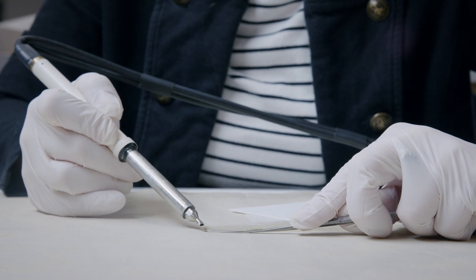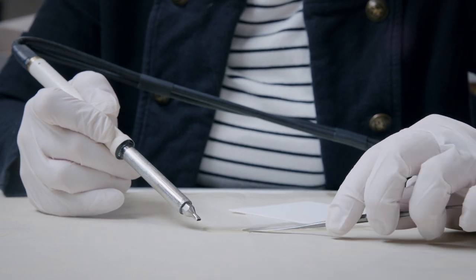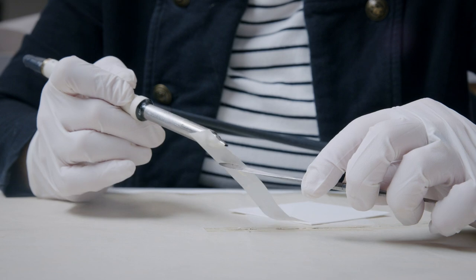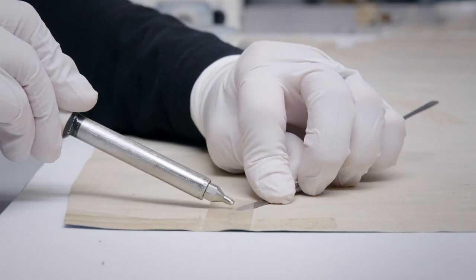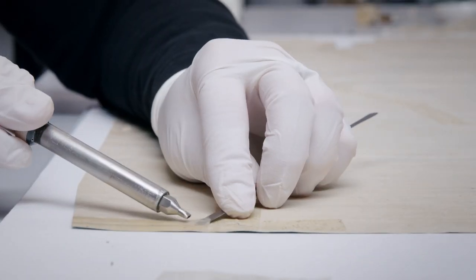This tool is a hot air pencil. It blows a gentle controlled stream of warm air at the tape. The heat softened the adhesive and allowed me to remove the plastic tape carrier with a spatula.